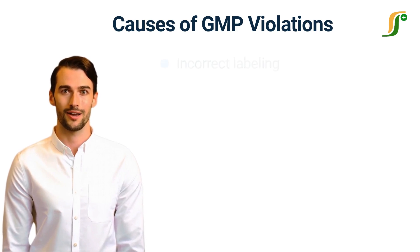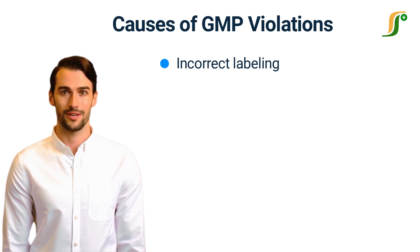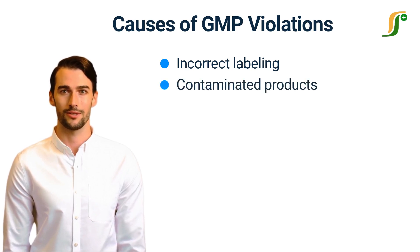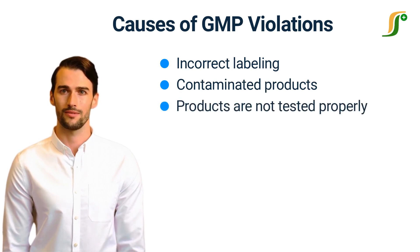One of the common GMP violations is incorrect labeling, where all ingredients of the product are not listed properly on the label. Sometimes contaminated products are distributed for sale, or products are not tested properly before releasing the product into the market.